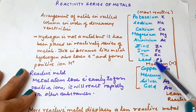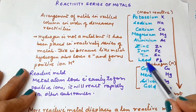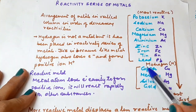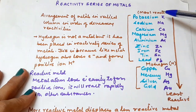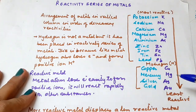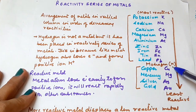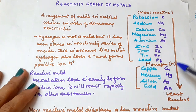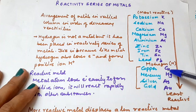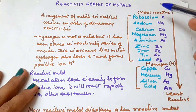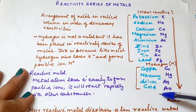Now, we are looking at hydrogen here. Hydrogen is not a metal, so why did we put it into the reactivity series of metals? The reason is hydrogen behaves like a metal because it loses electrons very easily and forms positive ions, which is a characteristic metal property. That is why we have placed hydrogen in this reactivity series of metals.